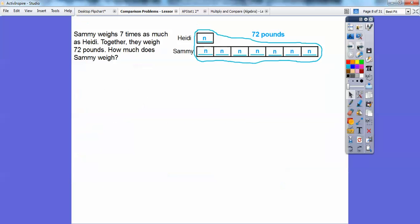So we're going to use the model above to write an equation, then find the value of n. All right, so how many n's do we see here? Well, I see there's seven down here plus this one right here, so I'm going to put an eight right here.